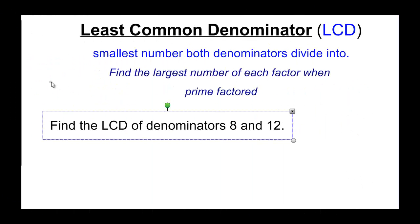So we think about the least common denominator and we have to then think about the smallest number that both denominators divide into. So we really want to think about multiples.